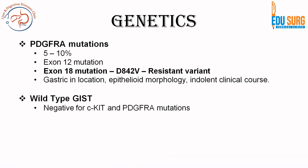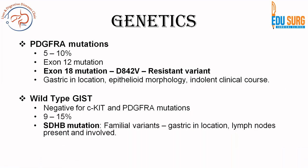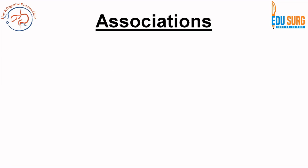In wild-type GIST, which is negative for CKIT and PDGFRA and represents 9 to 15% of cases, the most common mutation is SDHB. This can have familial variance and is usually gastric in location. Other mutations seen in CKIT and PDGFRA negative GIST include BRAF, neurofibromatosis 1, NTRK, and FGFR fusions.